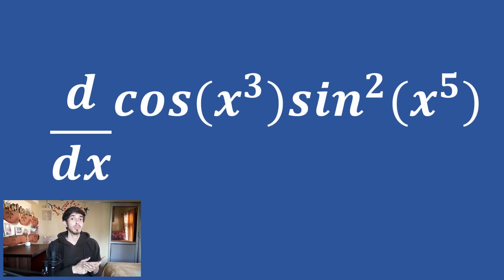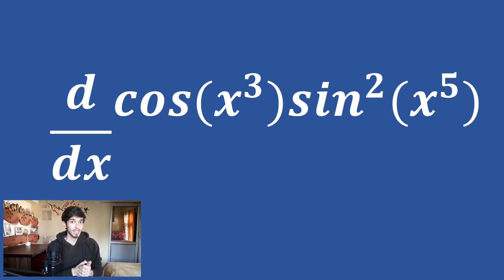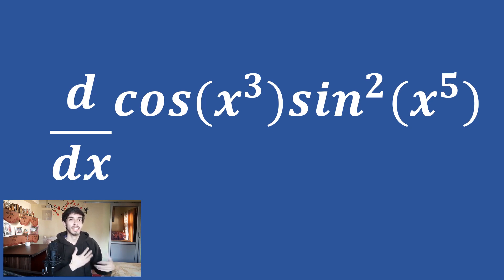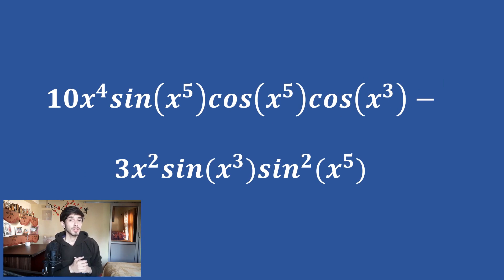With all these rules, examples, and formulas you are good to go to solve most basic differentiation problems. As an exercise, find the differentiation of cos x cubed times sin squared x raised to the power 5. If you watched this video carefully you will be able to do this. Remember to use the chain rule carefully. If you do it right you will get the shown answer. I hope this video helped you — thanks for watching, and always remember that math is everything.